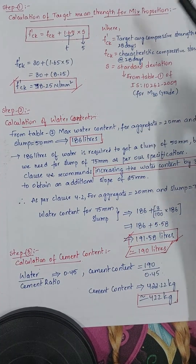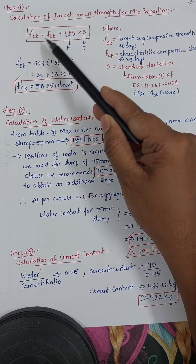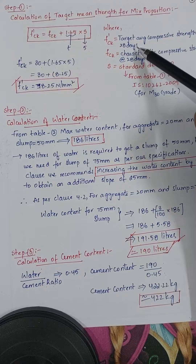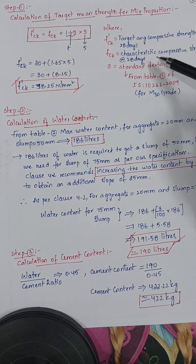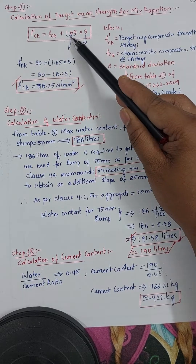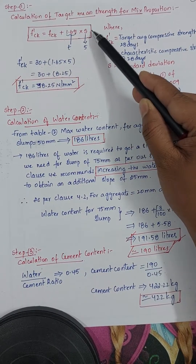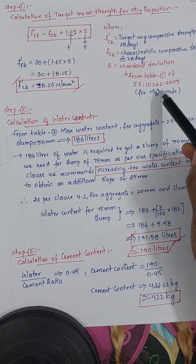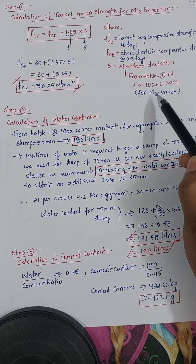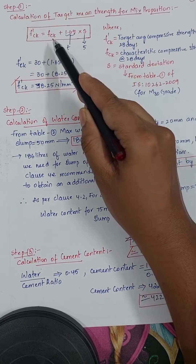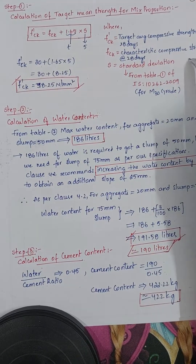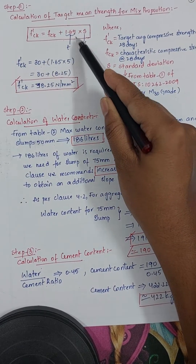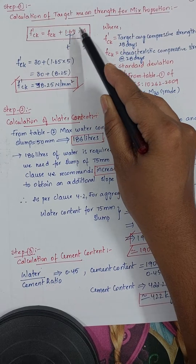Step 1: calculation for target mean strength. The formula is F'ck = Fck + 1.65 × S, where F'ck is the target average compressive strength at 28 days, Fck is the characteristic compressive strength at 28 days, 1.65 is a constant, and S is the standard deviation taken from table 1 of IS 10262:2009. For M30 grade, that table gives S = 5, and Fck = 30.